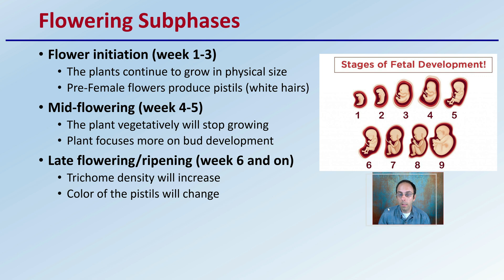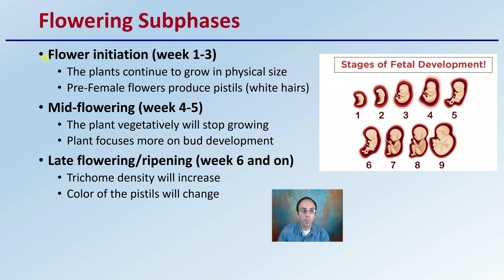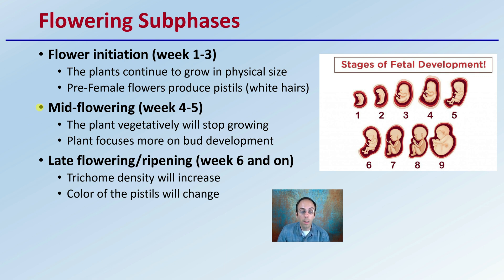The flowering sub-phases are kind of like the stages of fetal development. Flowering initiation is at one to three weeks, and the plants continue to grow in physical size. Pre-female flowers produce the pistils, which are the thin little white cat-like whisker hairs. Then we get into the mid-flowering phase, approximately weeks four to five, where the plant will kind of stop or slow vegetative growth as it focuses more on bud development. Then we get into late flowering or ripening, which is basically week six and beyond, where trichome density will be noticeably increased and the color of the pistils will also change. This gives you another indication of whether you are in initiation, mid-flowering, or late-flowering phase.